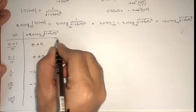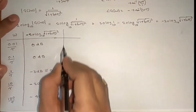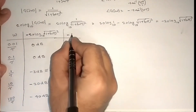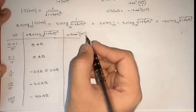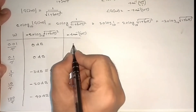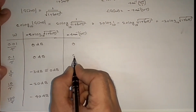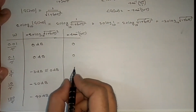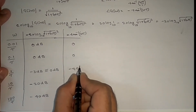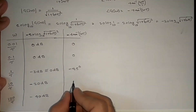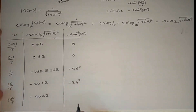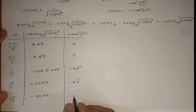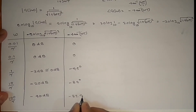For the phase, we have: phase = minus tan⁻¹(ωτ). At ω = 0.01/τ, tan⁻¹(0.01) ≈ 0°. At ω = 0.1/τ, it is also approximately 0°. At ω = 1/τ, tan⁻¹(1) = −45°. At ω = 10/τ, tan⁻¹(10) ≈ −84°. At ω = 100/τ, tan⁻¹(100) ≈ −89.4°.